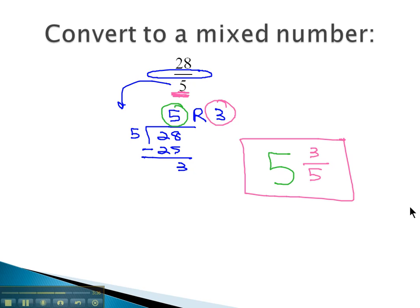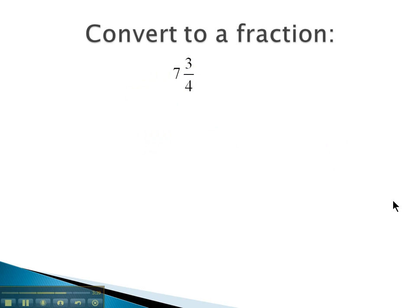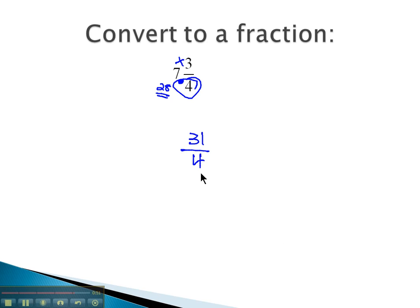Let's try one that goes the other way. Let's convert the mixed number seven and three-fourths into a fraction. We recall to do this, we want to multiply the denominator times the whole number, and then we will add to that the numerator. Four times seven is twenty-eight, plus three is thirty-one, over the original denominator of four. And that gives us our equivalent fraction for the mixed number seven and three-fourths.